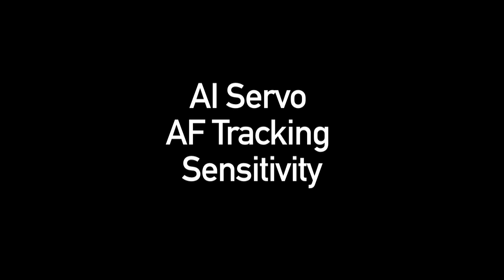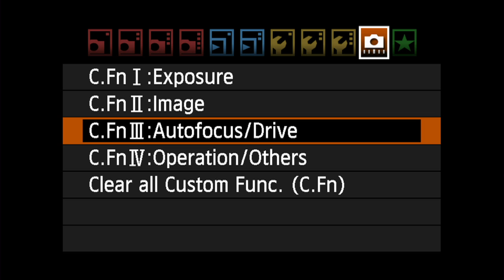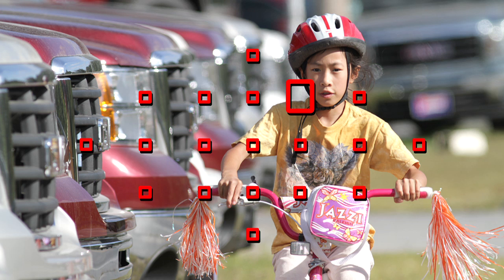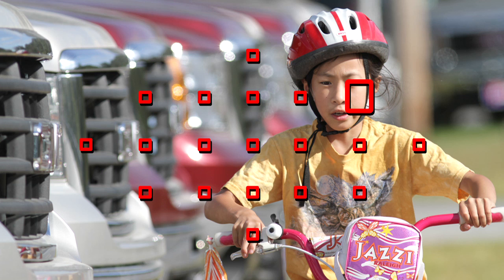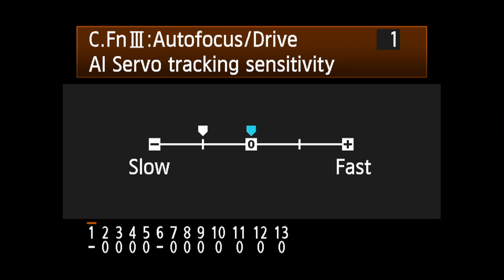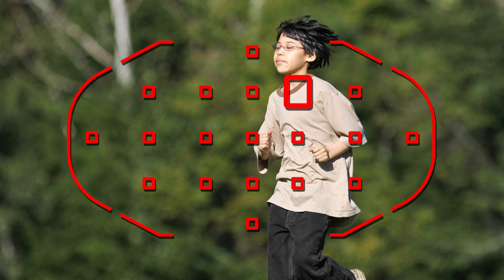AI Servo AF Tracking Sensitivity lets you adjust the camera's sensitivity to sudden changes when tracking a moving subject in AI Servo AF. The Fast setting means the camera will refocus almost instantly if the AF point leaves your subject or something comes between you and your subject. The Slow setting means the camera will pause for a moment if this happens.